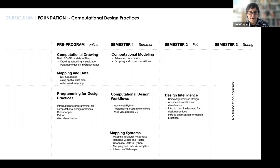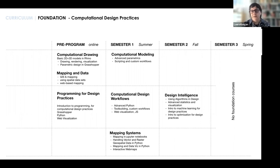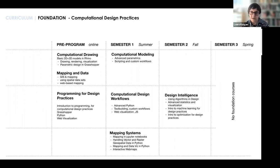Computational modeling covers advanced parametrics, scripting, custom workflows, and computational urbanism. Computational design workflows covers advanced Python tool building, custom workflows, web visualization, and JavaScript — if you're very familiar with these languages you can waive this class. Mapping systems introduces students to mapping in Jupyter Notebooks, handling of vector and raster data, geospatial data in Python, and the creation of interactive web maps. Design intelligence in the fall uses algorithms in design, advanced statistics, introduction to machine learning for design practices, and intro to optimization for design practices.